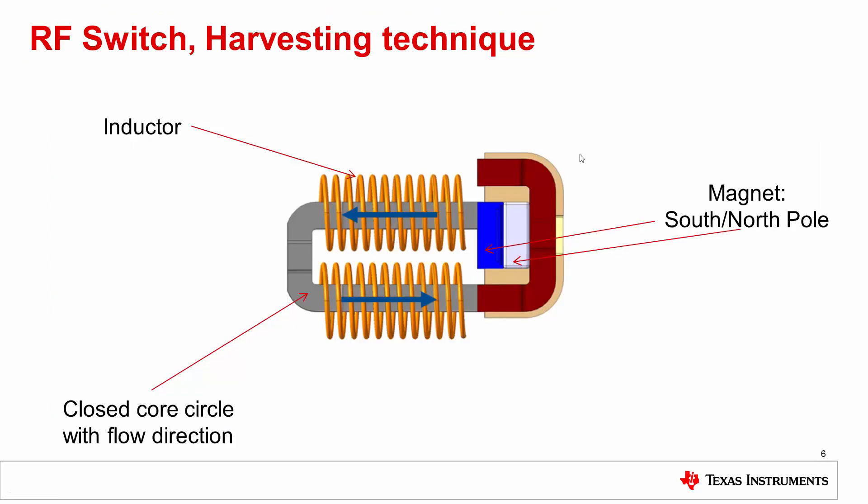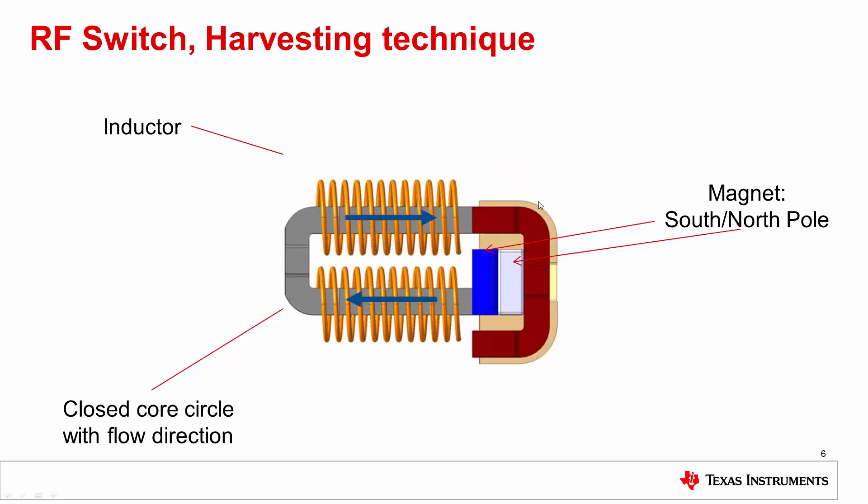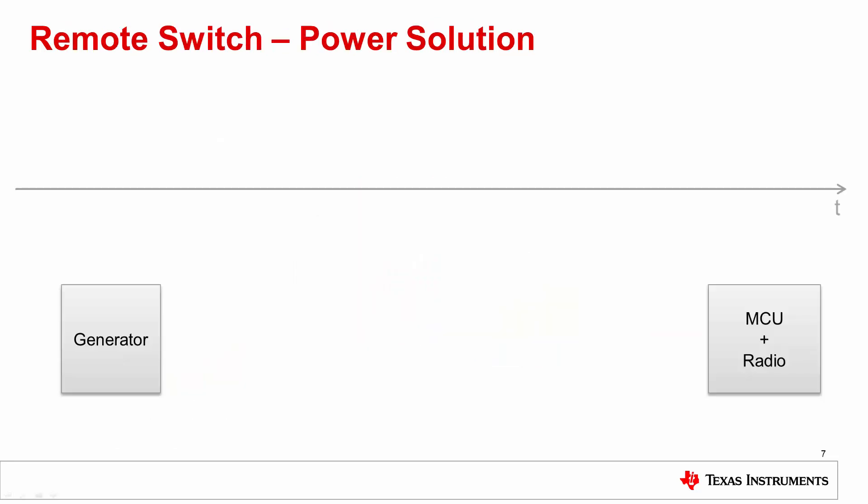The first energy harvesting example we will look at today is an RF switch. This is a light switch in your home. On the drawing here in the red is the switch part the user will push. We have a magnet inside with the two poles creating a magnetic field through this core back to the other pole. When the user flips the switch, you can see that the field changes. It goes the opposite direction through the core. And we know from Maxwell's equations that this change in magnetic field through these windings will produce a current. And this is energy that we can harvest and make use of. Now the end goal of course is to turn on a light without having to run a wire between the switch and the light fixture. This must be done wirelessly.